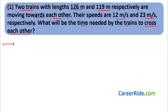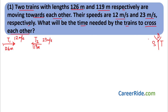Their speeds are 12 meters per second and 23 meters per second respectively. What will be the time needed by the trains to cross each other? Train T1 moves at 12 m/s, train T2 at 23 m/s. Length of T1 is 126 meters, length of T2 is 119 meters. This is a speed, distance, time sum. We need DST, we must include the length of the train, and we must find relative speed since both trains are moving.